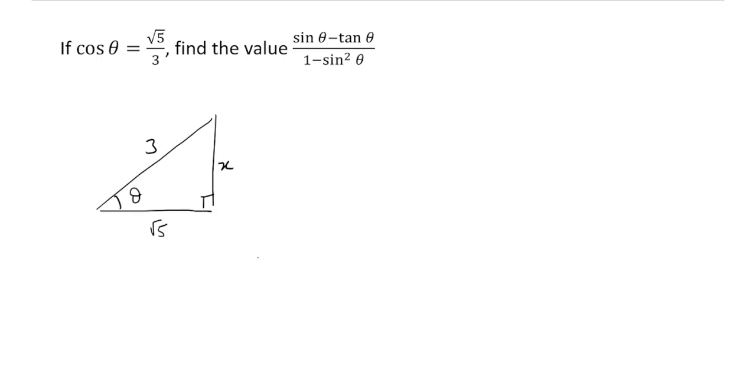Now, how can I calculate x? Again, we just use Pythagoras. Root 5 squared plus x squared must be equal to 3 squared. And of course, that means that 5 plus x squared must be equal to 9. So x squared is equal to 4, which means that x is equal to 2. So we now know that x is equal to 2.